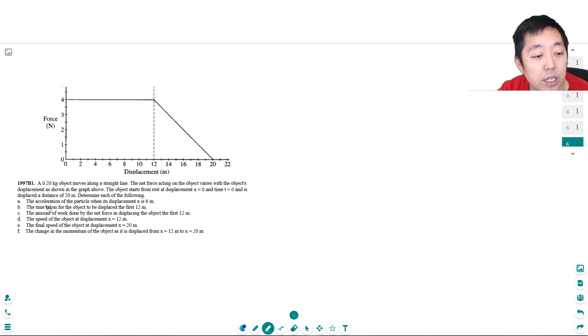Determine each of the following: the acceleration of the particle when its displacement is 6 meters. So at 6 meters, what do we see here? The force is 4 newtons—the net force. We know that net force equals ma. So if I know this is 4 newtons and the object is 0.2 kilograms, I can solve for a. It's just 4 newtons over 0.2 kilograms, which equals 20 meters per second squared.